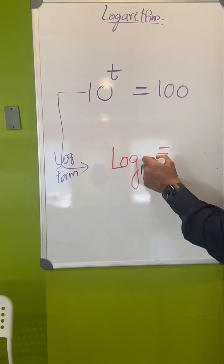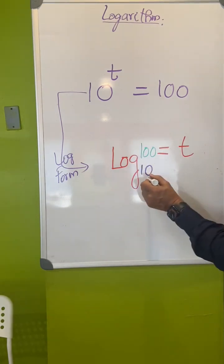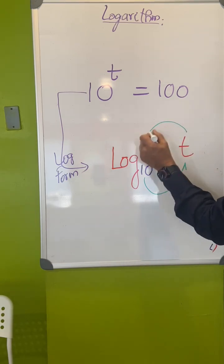Equal to 10 raised to what? 100. So now let's check that. 10 raised to t equal to 100.